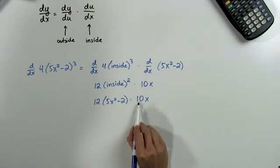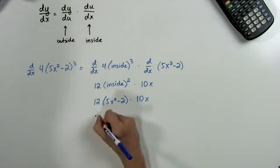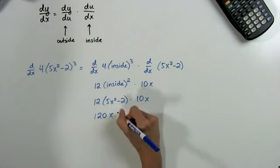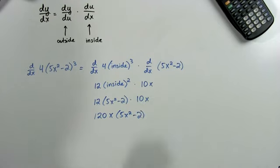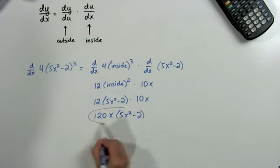We can go ahead and multiply this 10x into the 12, and we'll get 120x times 5x squared minus 2. We can expand this and multiply it out, or we can just leave this as our answer.